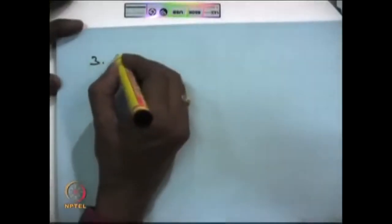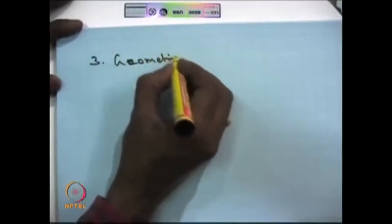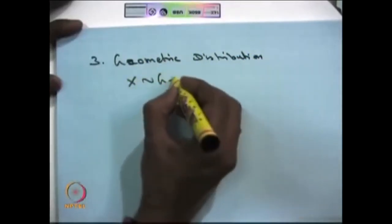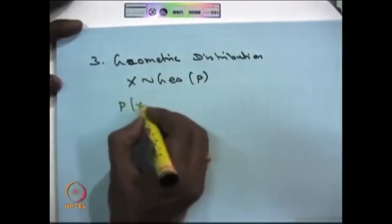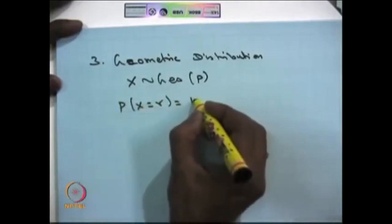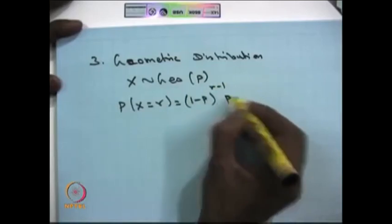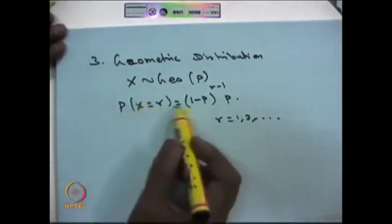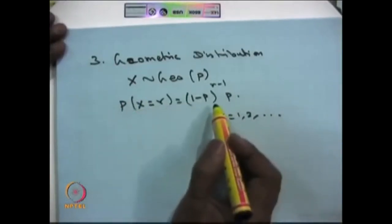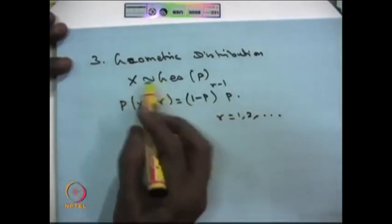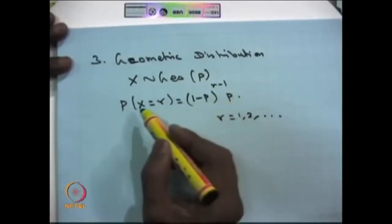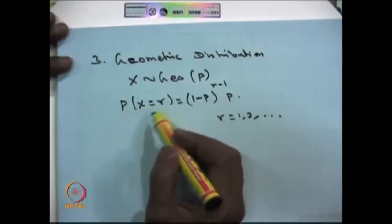The third discrete random variable we are going to use is the geometric distribution. When we say the random variable X is geometrically distributed with parameter p, the probability mass function is (1-p)^(r-1) * p, where r can take values 1, 2, and so on. If any discrete random variable has a PMF of this form, we say it is geometrically distributed with parameter p, where p is the probability of success in each trial.